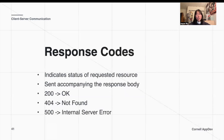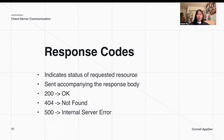Responses from the back end are generally associated with some kind of code to tell us what's going on at an abstract level. The response can also send information back to the front end in a body, just like how a request sent information from the front end to the back end. Some common response codes you might have seen: 200 for OK; 404 for Not Found if you hit a site that isn't working; and 500 for Internal Server Error.